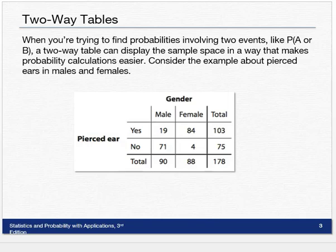Consider the example about pierced ears in males and females. Why do we call it a two-way table? Because there's two variables: gender and whether the ear is pierced or not. So we have two variables connected. You can see that each spot is filled. You have 19 males who have pierced ears and 84 females out of the sample. And they have the total columns here and here.